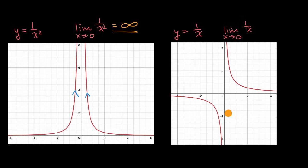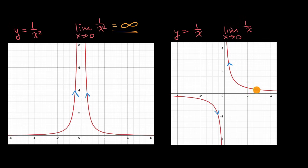But what about the y equals one over x scenario? Can we use our new notation here? When we approach zero from the left, it looks like we're unbounded in the negative direction. And when we approach zero from the right, we're unbounded in the positive direction.